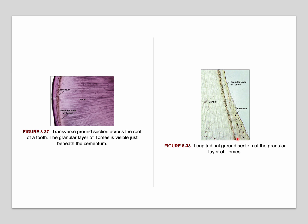Another section shows the relationship between dentine and cementum. There is a hyaline layer here and the granular layer of Tomes beneath it. Again you can see the granular layer of Tomes clearly. These pictures are taken from your textbooks, so you can go back and see them there, and you can also magnify them in the presentations.